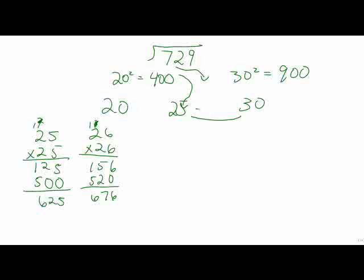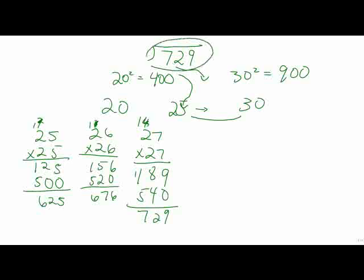It's continually moving closer to 30. I'm going to try 27 now. 27 times 27, and we have an answer of 729. That is what we initially were looking for. So I know that the square root of 729 is 27.